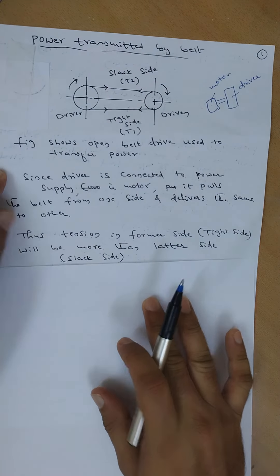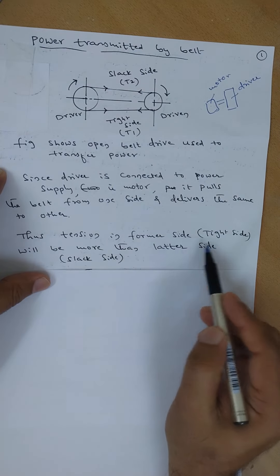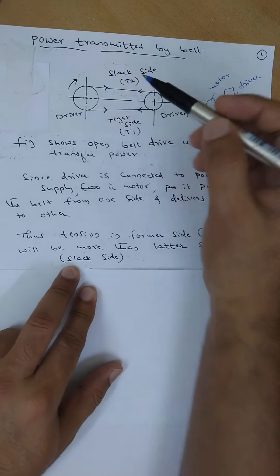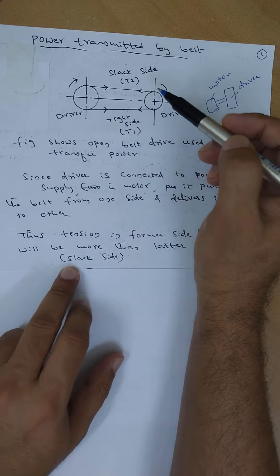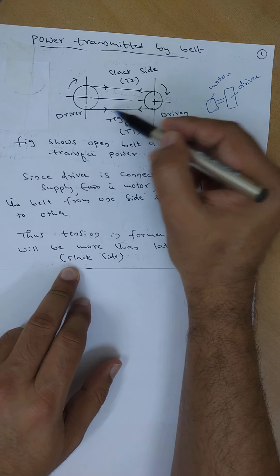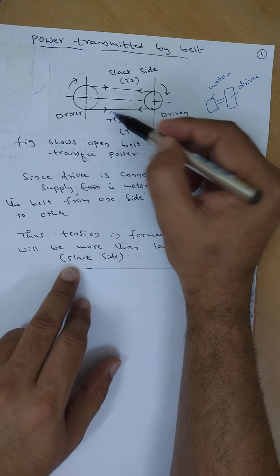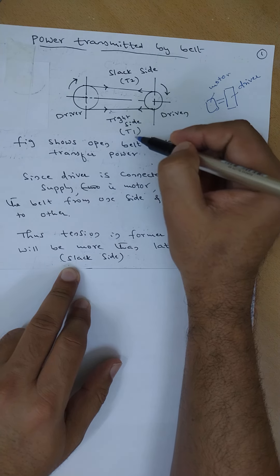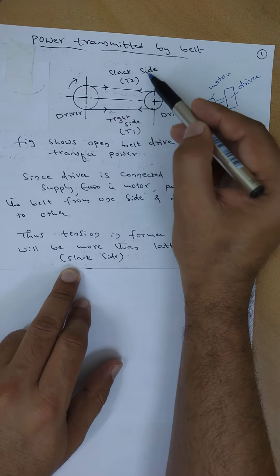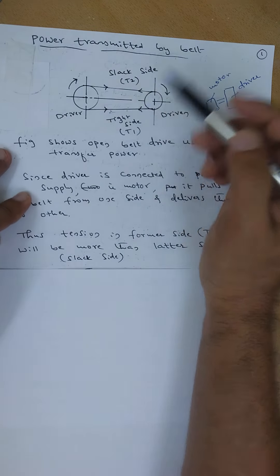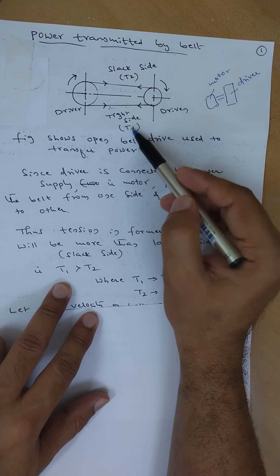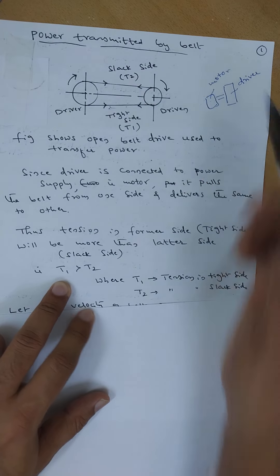If that is the case, the tension in the former side — the tight side — will be more than the latter side, that is the slack side. We have two sides: one is tight side and one is slack side. The tight side pulls tightly, so more tension is needed, and that is why it is denoted by T1. The slack side delivers less tension and is denoted by T2. So T1 is greater than T2 — the tension in the tight side is greater than tension in the slack side.